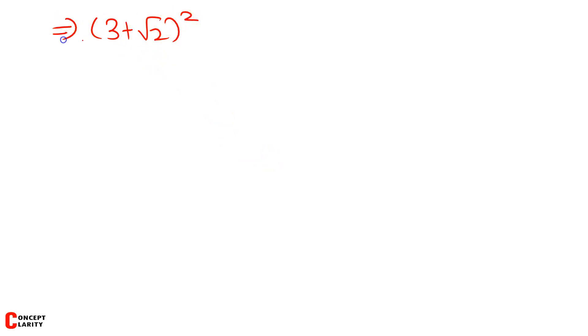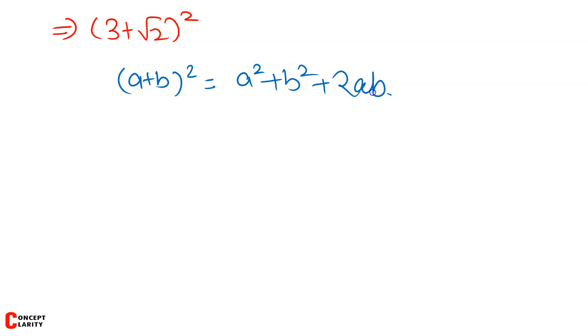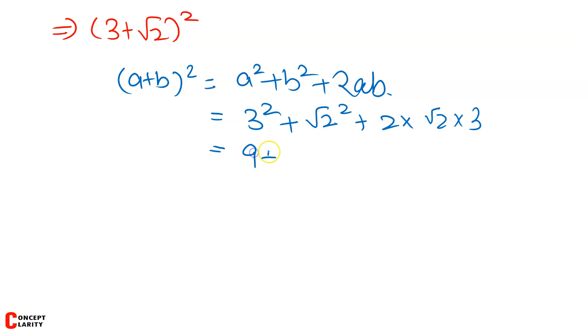Next question: what is (3 + √2) whole square? Calculate the result. This is a very easy question — simple multiplication. I will give you the solution using the formula: (a + b)² = a² + b² + 2ab. Similarly here: a² is 3², plus √2 squared, plus 2 into √2 into 3. This gives out to be 9 plus 2 plus 6√2, which equals 11 + 6√2.